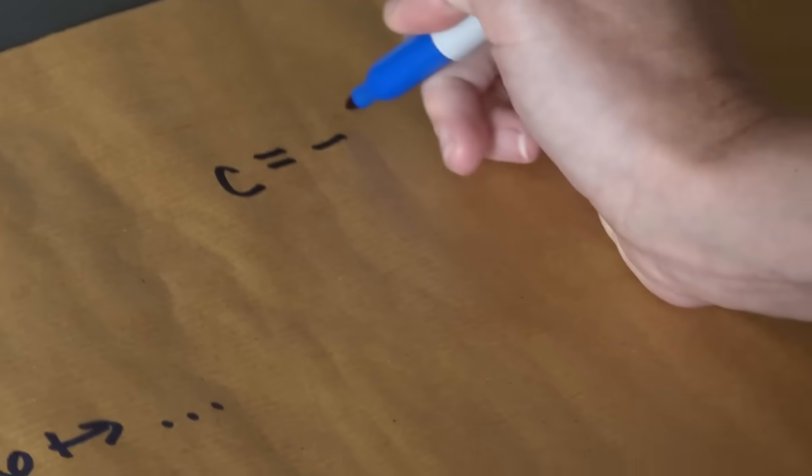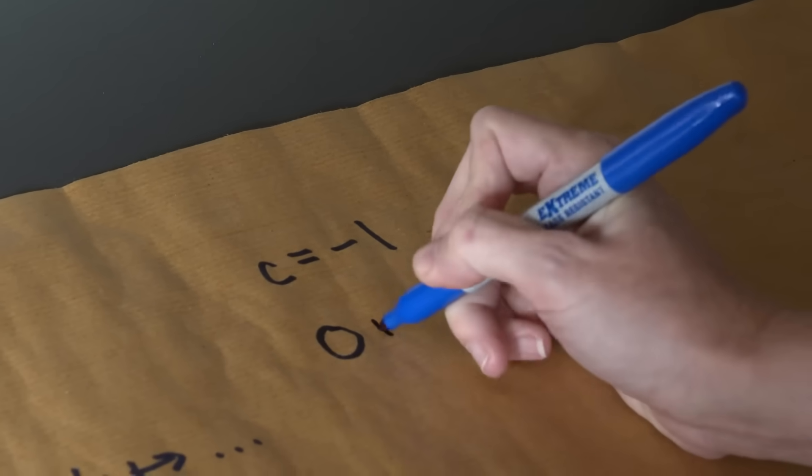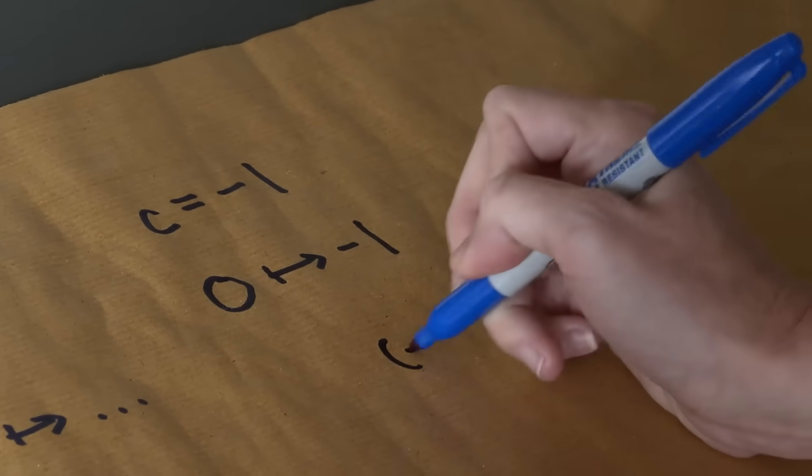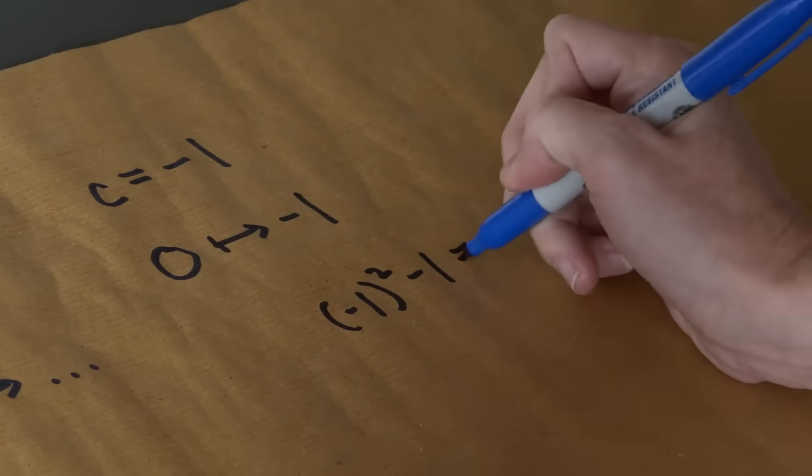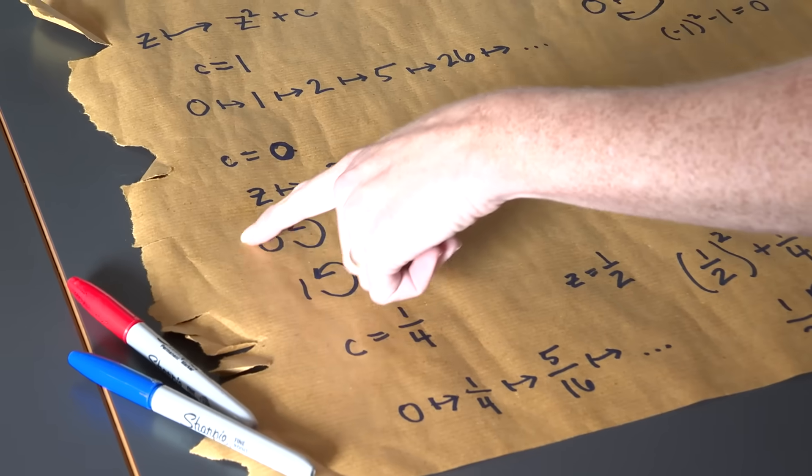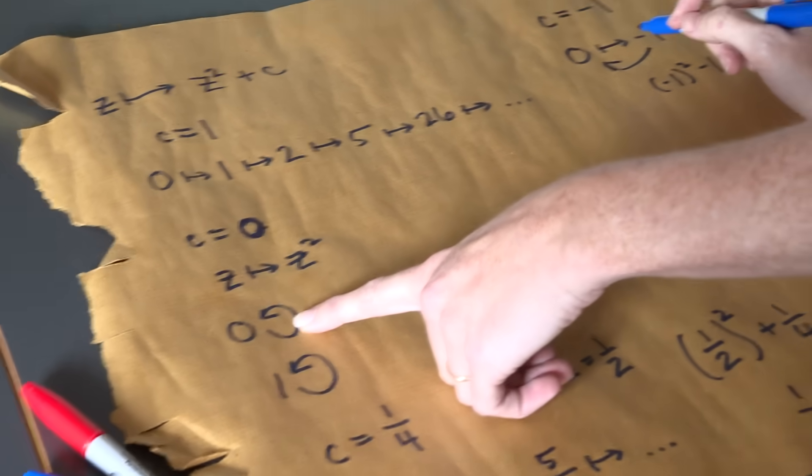So if, say, c is equal to minus 1, then actually 0 does this because 0 squared minus 1 is minus 1. And minus 1 squared minus 1 takes us right back to 0. So the number of integers that we see here, or fractions that we see here, can be higher than 1 at least.